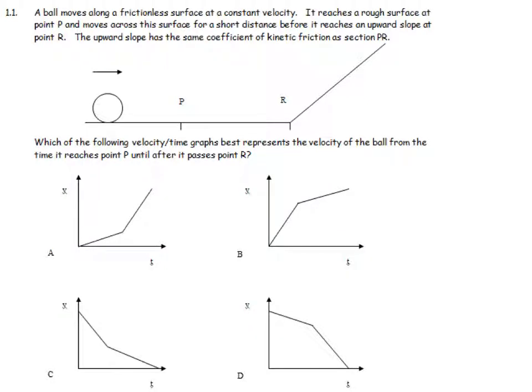A ball moves along a frictionless surface at a constant velocity. It reaches a rough surface at point P and moves across that surface for a short distance before it reaches an upward slope at R. The upward slope has the same coefficient of kinetic friction as PR. Between P and R, this ball is going to slow down, so its velocity gets less. We are either looking at that one or at that one over there.